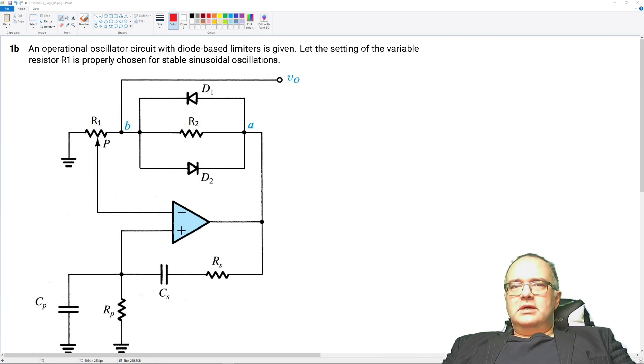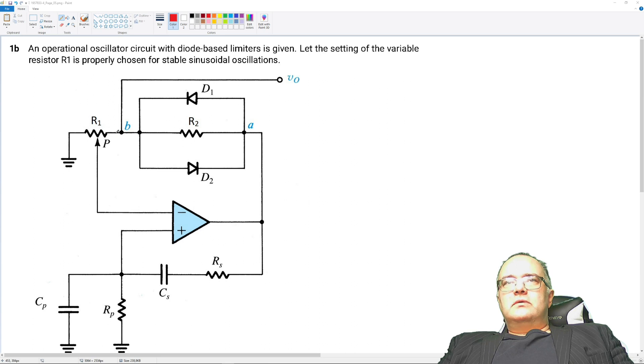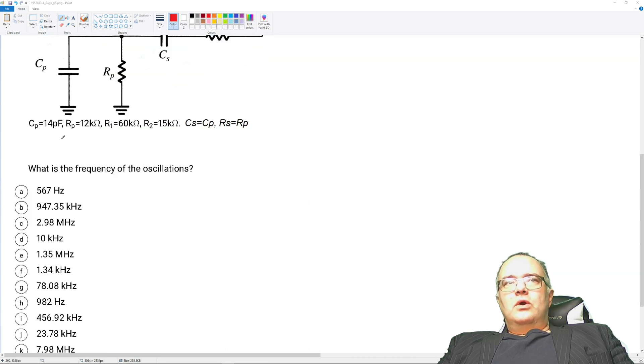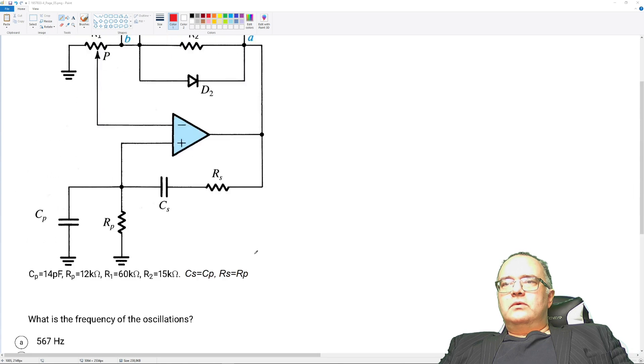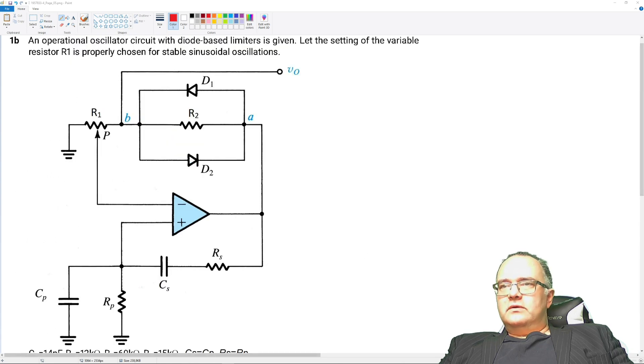Hi, my name is Georgi Radulov. An operational oscillator circuit with a diode-based limiter is given. Let the setting of the variable resistor R1 is properly chosen for stable sinusoidal oscillations. What is the frequency of the oscillations? The parameters of the circuit are given. So what will be the frequency of oscillation?